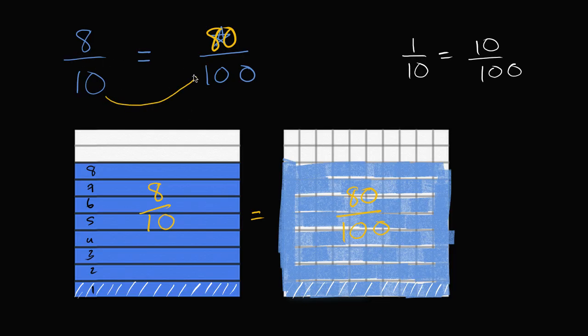Now look, if we divide it into ten times as many sections, so if we multiply our denominator by ten, to go from ten to a hundred, well that means that each of these eight sections in this one are going to represent ten times as many in this one. So we would say, well eight is going to represent ten times as many of the hundredths.